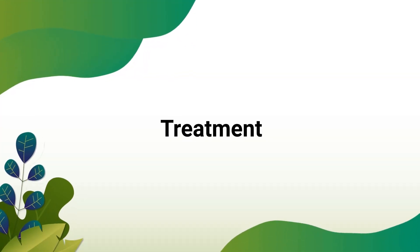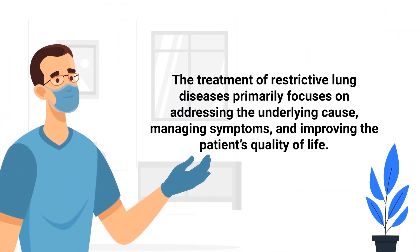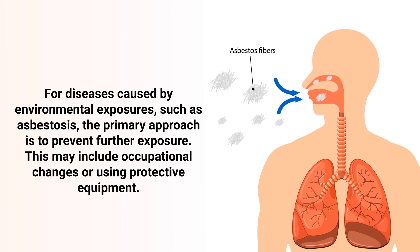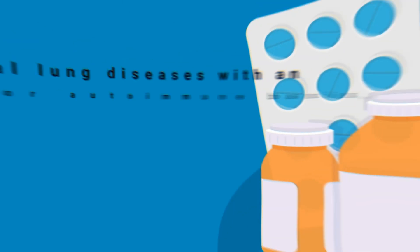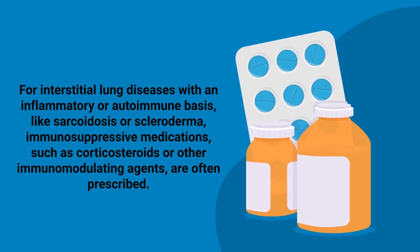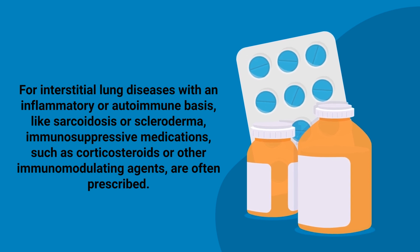Treatment for restrictive lung diseases primarily focuses on addressing the underlying cause, managing symptoms, and improving the patient's quality of life. For diseases caused by environmental exposures such as asbestosis, the primary approach is to prevent further exposure, which may include occupational changes or using protective equipment. For interstitial lung diseases with an inflammatory or autoimmune basis like sarcoidosis or scleroderma, immunosuppressive medications such as corticosteroids or other immunomodulating agents are often prescribed.